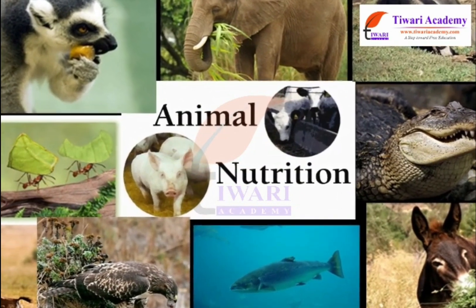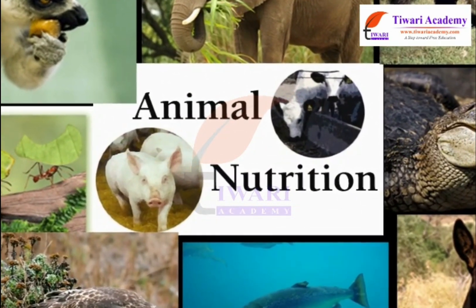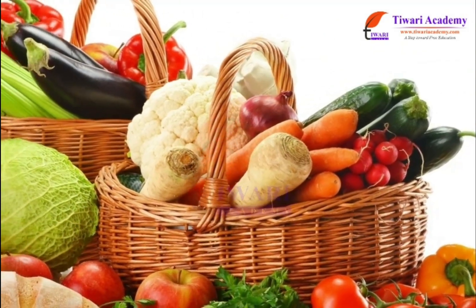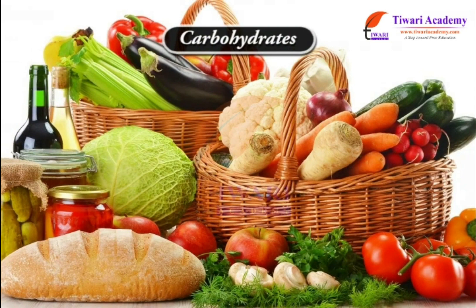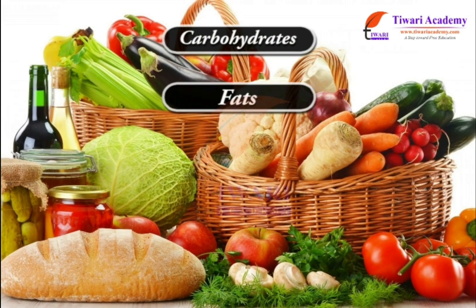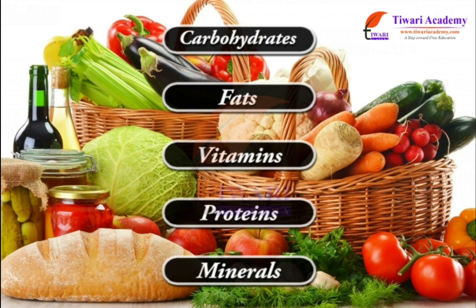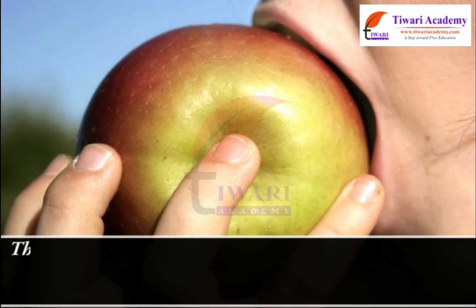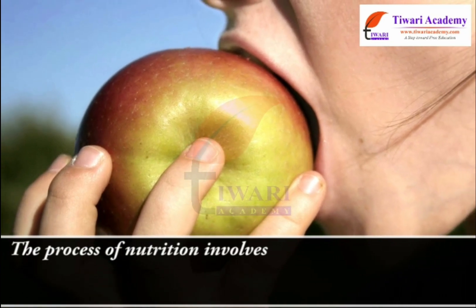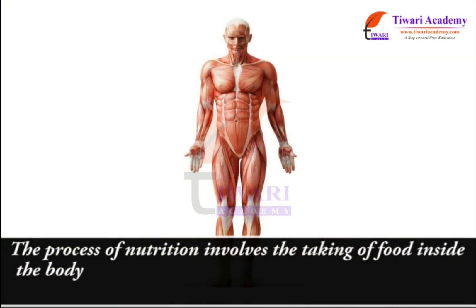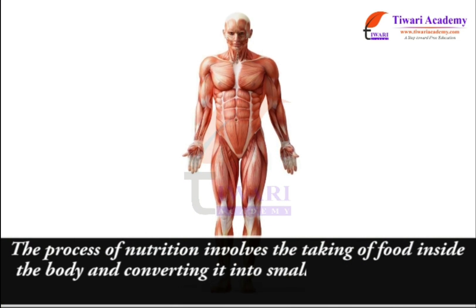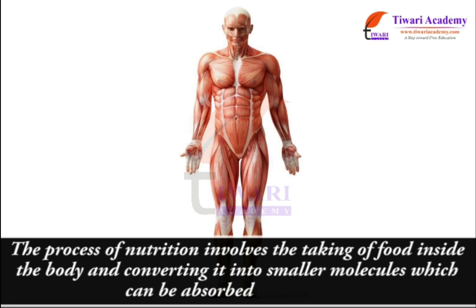Let us learn more about nutrition in animals. Food has various complex components like carbohydrates, fats, vitamins, proteins and minerals. It is necessary to break down these complex components into smaller ones. The process of nutrition involves the taking of food inside the body and converting it into smaller molecules which can be absorbed by the body.